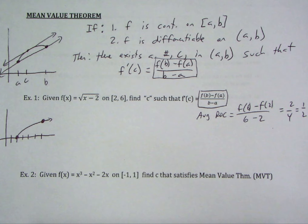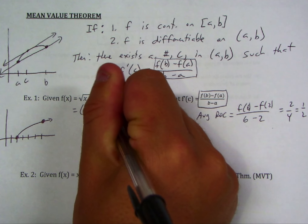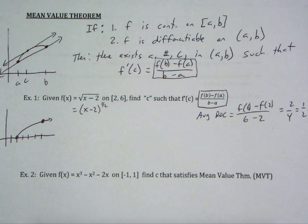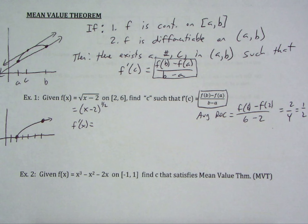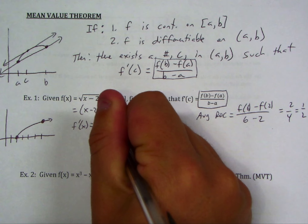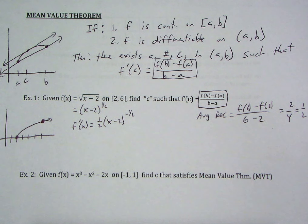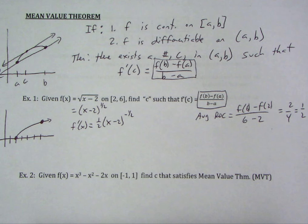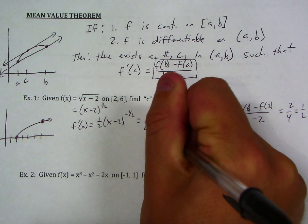Now I want to find the derivative. The function is x minus 2 to the 1/2, so we use the chain rule: 1/2 comes out in front, the inside stays the same, reduce the power by 1, times the derivative of the inside which is just 1. So f prime of x equals 1 over 2 times the square root of x minus 2.